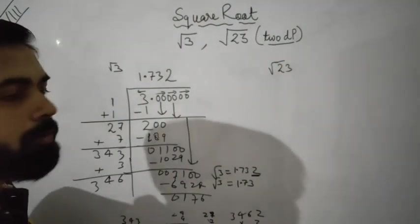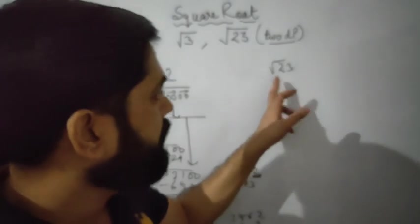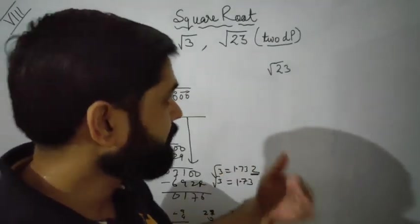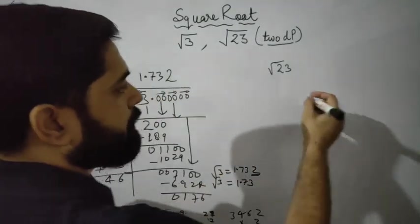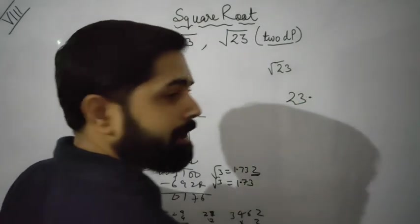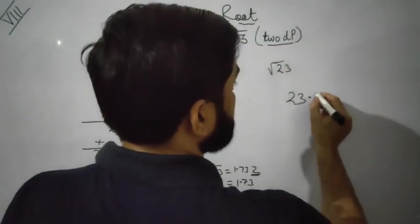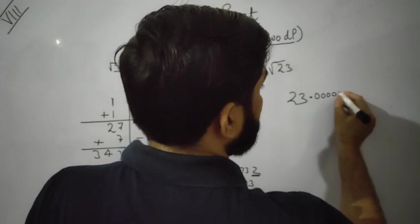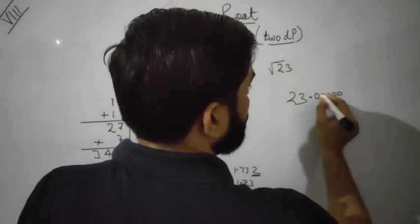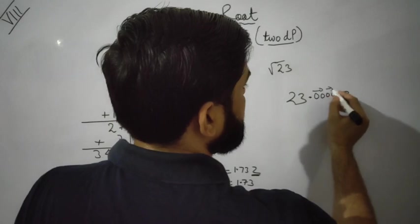Under root 23 — write 23, then a decimal point. We need two digits after decimal, so write zeros: 0 0, 0 0, 0 0. Make the pairs.